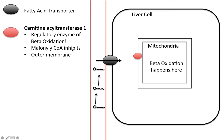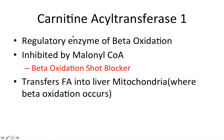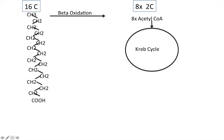Malonyl-CoA inhibits carnitine acyltransferase 1 — think of malonyl-CoA as a beta oxidation shot blocker. It acts at the outer membrane of the mitochondria. So to summarize: carnitine acyltransferase 1 is the regulatory enzyme of beta oxidation, it is inhibited by malonyl-CoA, and it transfers the fatty acid into the liver mitochondria.